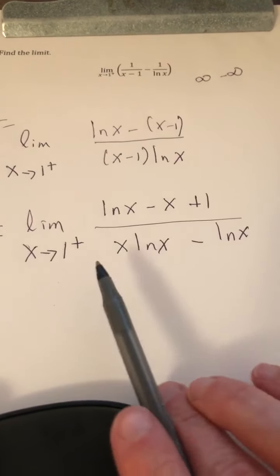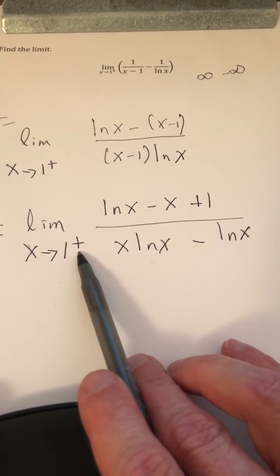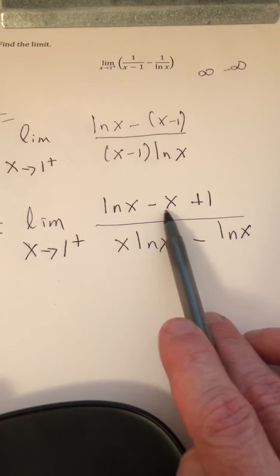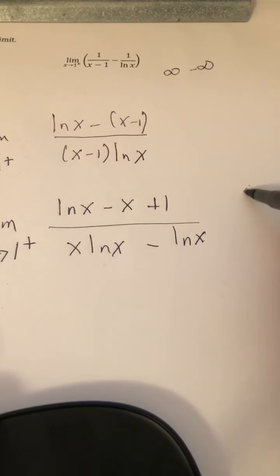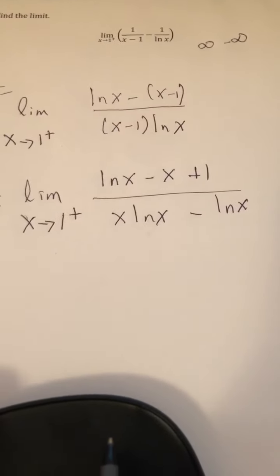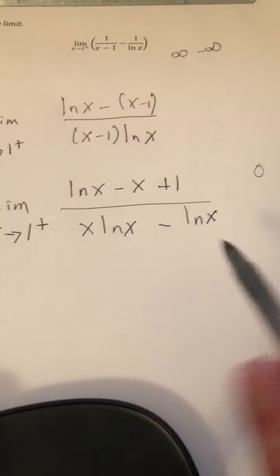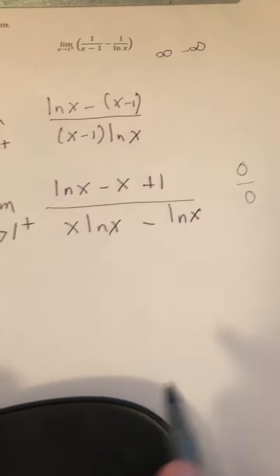Now, as I try to let x approach 1 from the right, let's see. L'n of 1 is 0. Negative 1 plus 1 is 0. So the numerator is going to be 0. The denominator is also going to be 0, because L'n of 1 is 0. So what we have is a 0 over 0 situation.